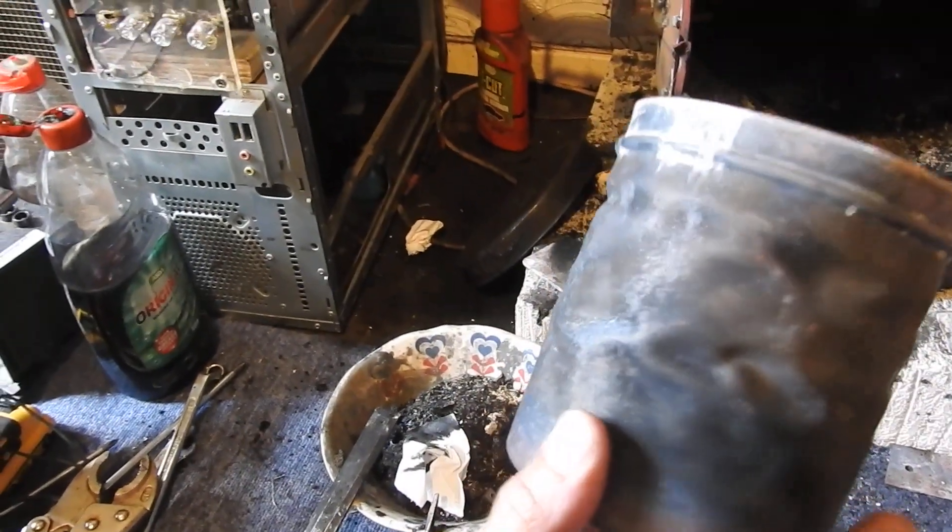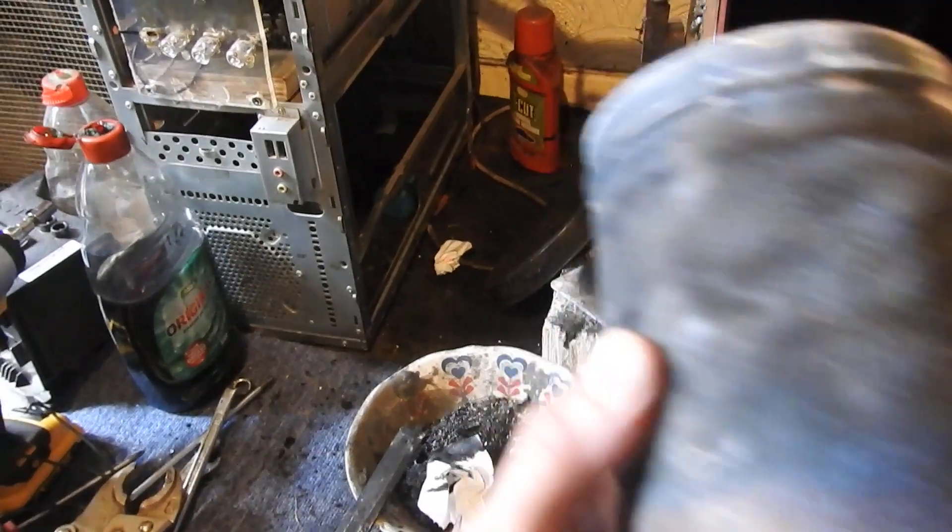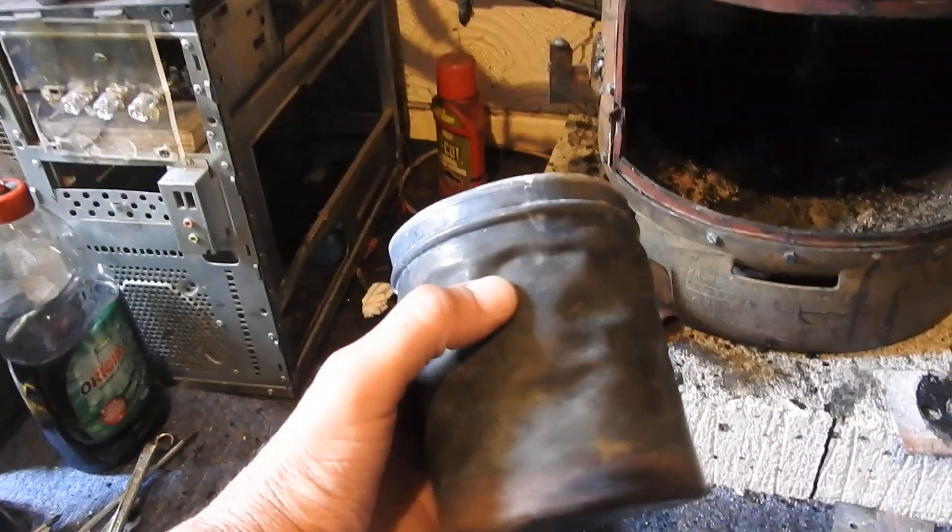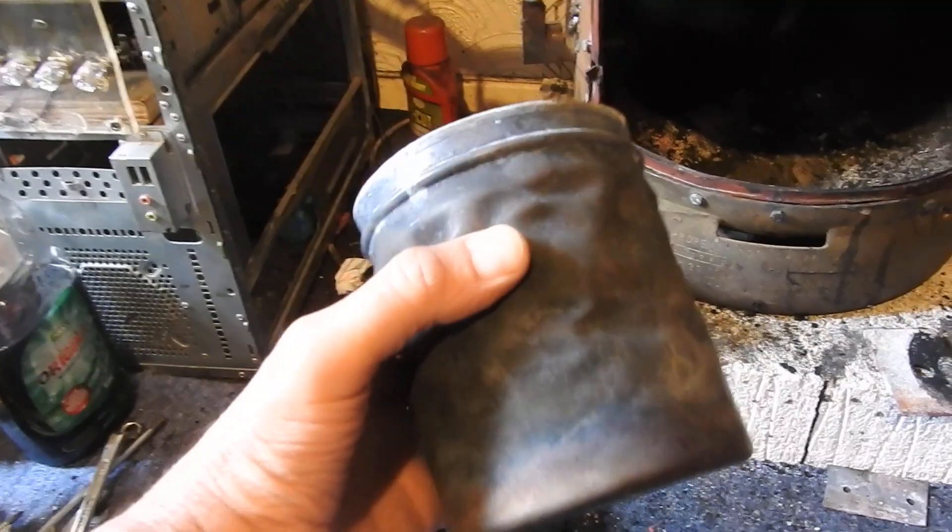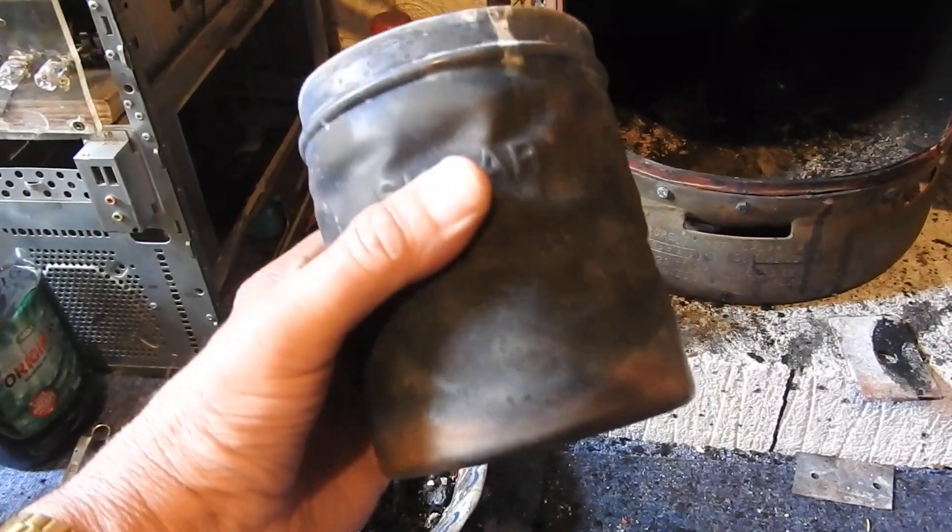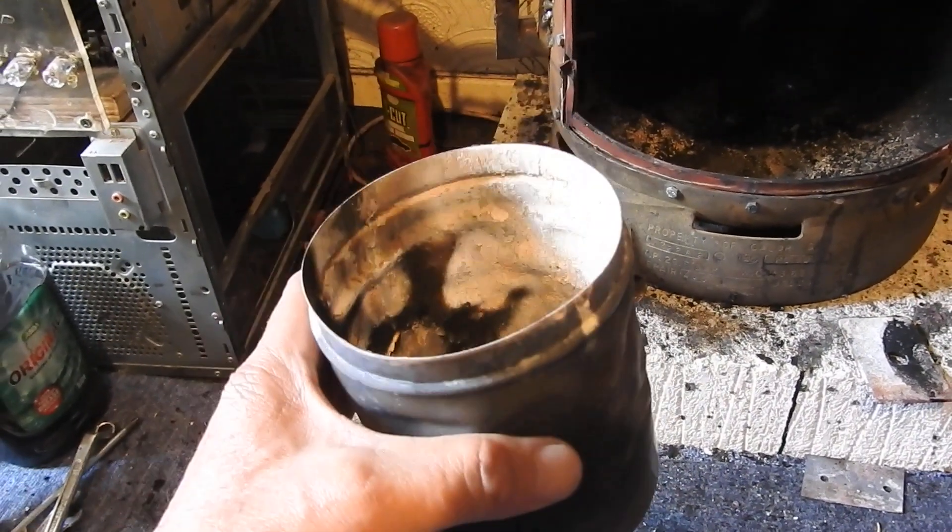Now look at the shape of that. It's bubbled and that's stainless steel. Melted it - not melted it, just softened it so it's collapsed on its own weight.